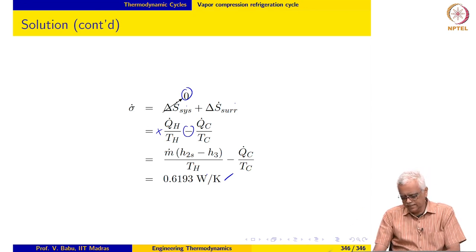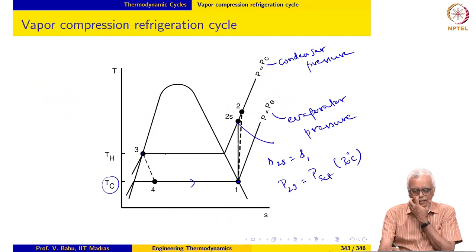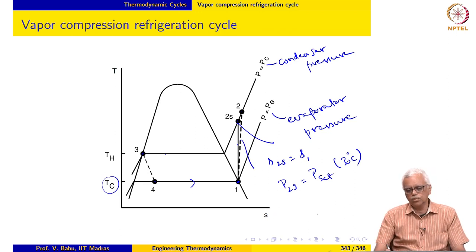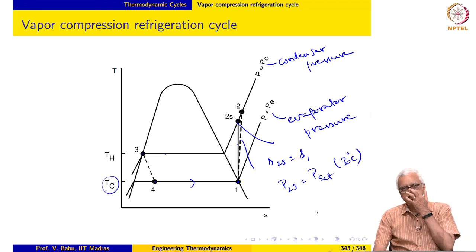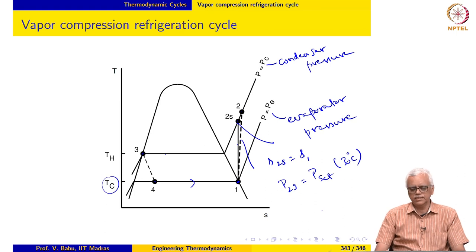As I said, this is an ideal cycle. We have taken the isentropic efficiency to be 100 percent. In reality, we have to account for internal irreversibilities in the compressor. Compressor efficiency here will typically be of the order of about 70 percent or so which is quite far from the 100 percent that we have assumed.